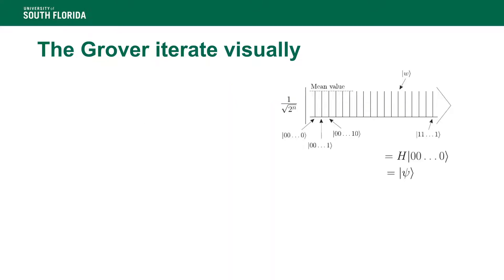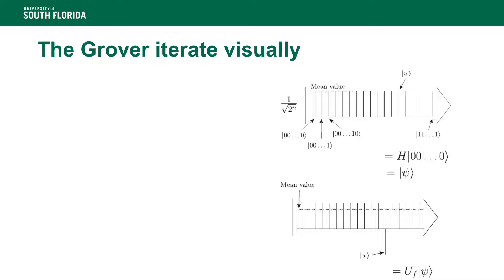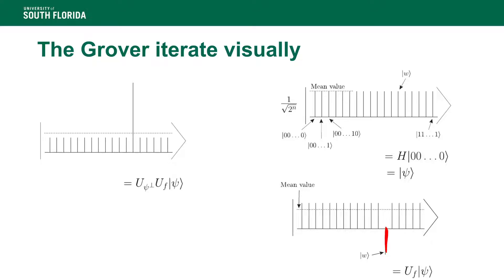Visually, we start with the uniform superposition of every possible answer. In the case of one marked element, the oracle multiplies by minus one the marked element. All coefficients are real throughout the algorithm — a very special case since in quantum algorithms coefficients can be complex. After the oracle call, only one element has a negative coefficient, and after inversion about the mean, that coefficient gets amplified while all others fall below the average.